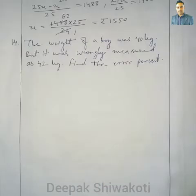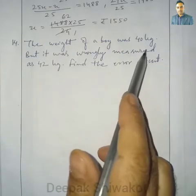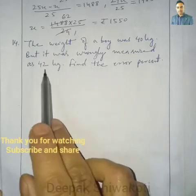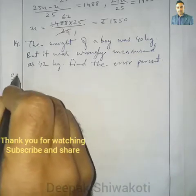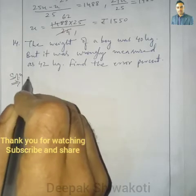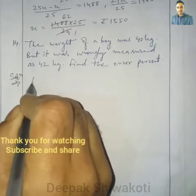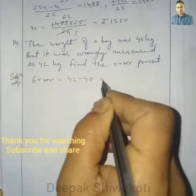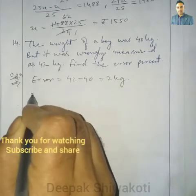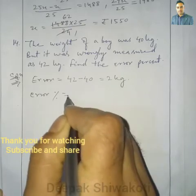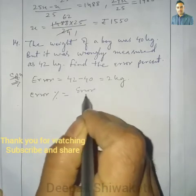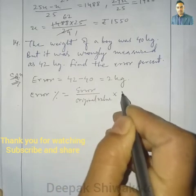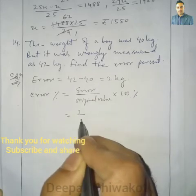Question number 14: The weight of a boy was 40 kg but it was wrongly measured as 42 kg. Find the error percent. Error means the mistake, so error equals 42 minus 40, which is 2 kg. Error percent is given by error divided by original value, into 100 percent. Error is 2 and original value is 40.